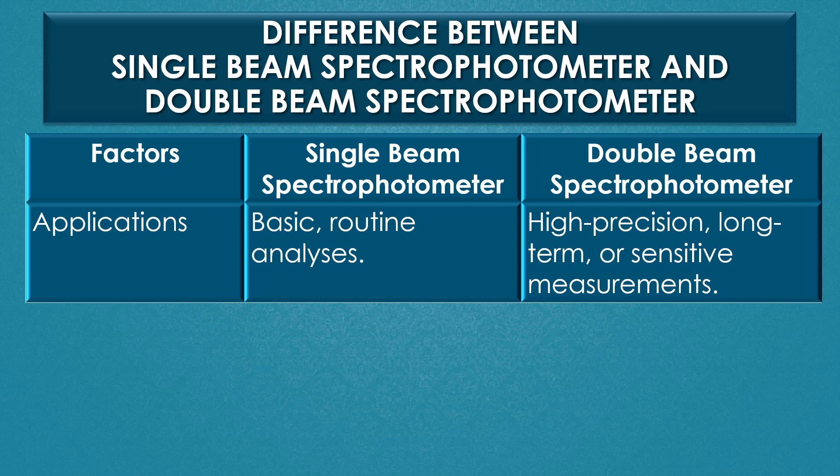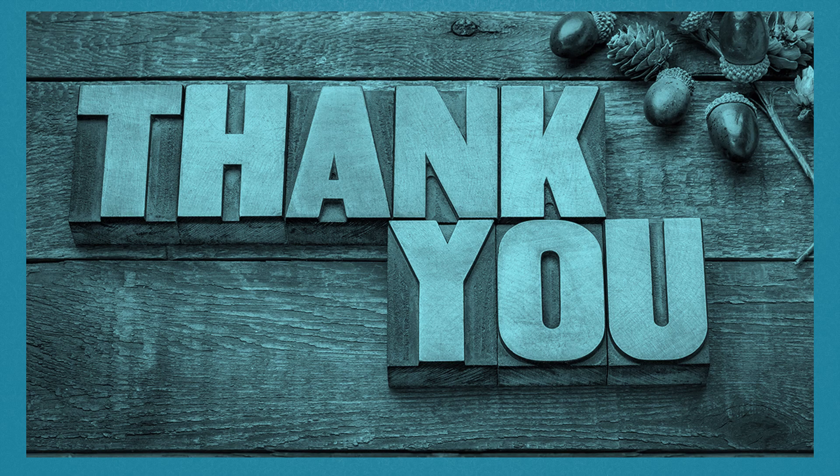In conclusion, single beam spectrophotometers are ideal for basic applications where cost and simplicity are key factors. But double beam spectrophotometers are preferred for more demanding analytical work that requires greater accuracy and stability. That is all about the differences between single beam spectrophotometer and double beam spectrophotometer.